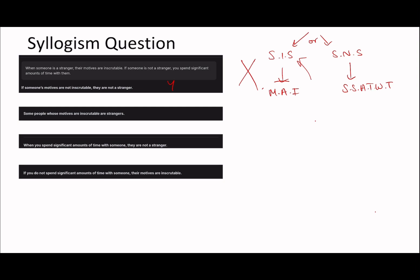'Some people whose motives are inscrutable are strangers.' Look where the arrow goes: we know that when someone is a stranger their motives are inscrutable, but this says some people whose motives are inscrutable are strangers. It could be all of them — every person whose motives are inscrutable could be a stranger. So we have to say no for this one.